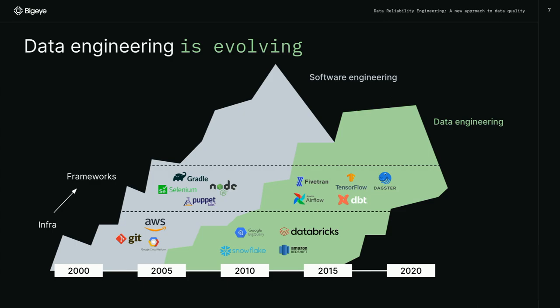Running these frameworks on cloud infrastructure makes things go much faster. Before, a team of 10 data engineers might manage dozens or 100 pipelines. Now we're seeing data teams of two or three people using Databricks, Fivetran, DBT, and a BI tool on top — and a team of two can manage the same number of pipelines and data products. This leads to the problem of scaling the data team and understanding what is going on inside those pipelines and data products.